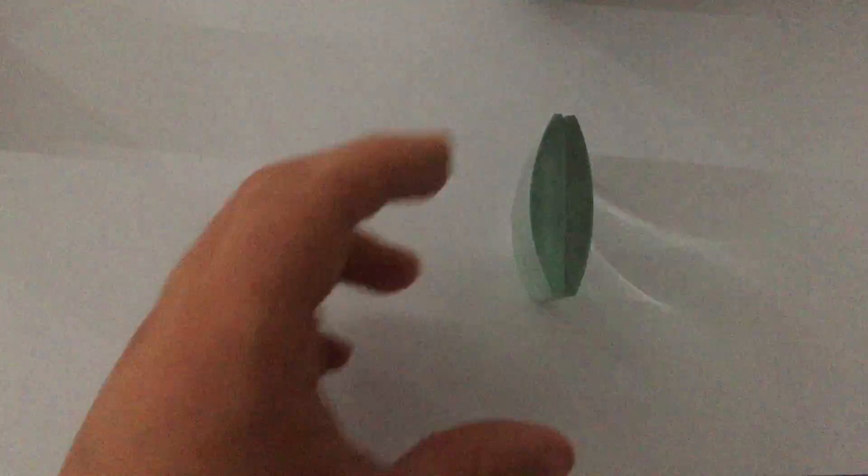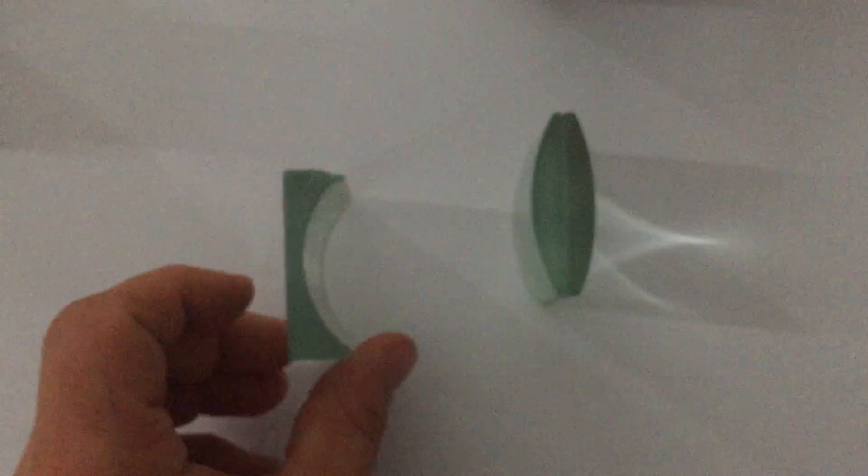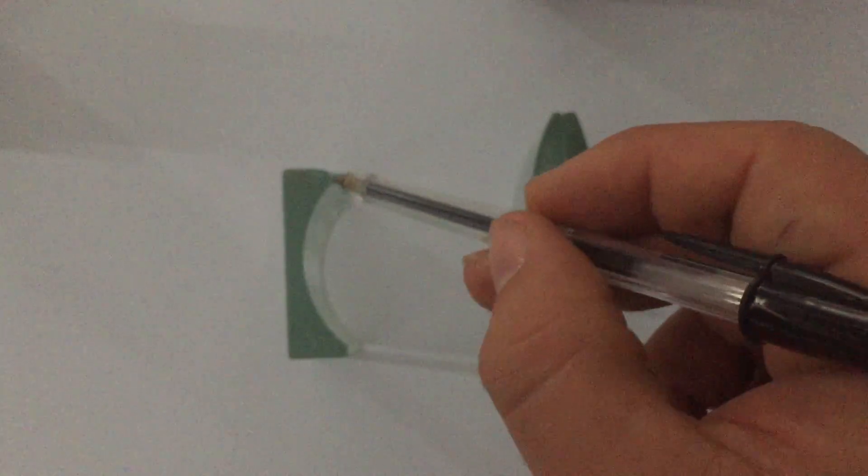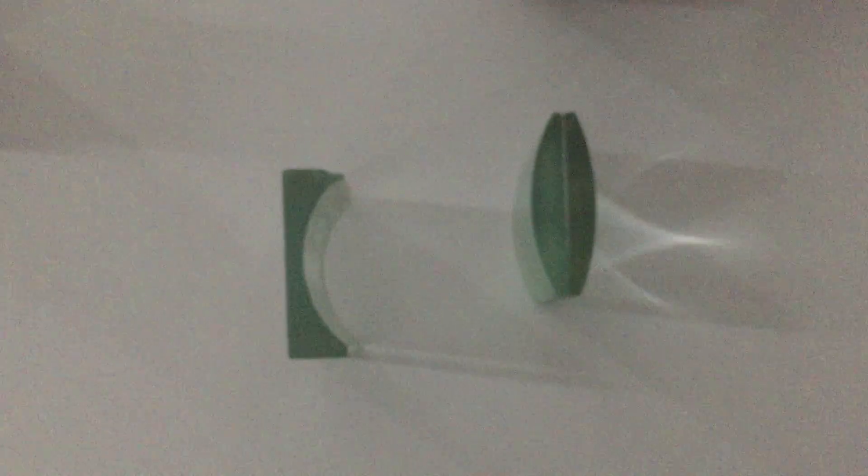First of all, we're going to start with a convex lens. Convex lenses are curved outwards. Just to give you a comparison, in a minute I'm going to use a concave lens. The way to remember it's very simple: concave goes in, just like a cave.